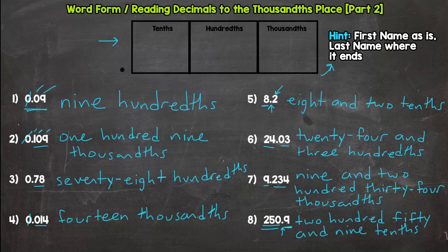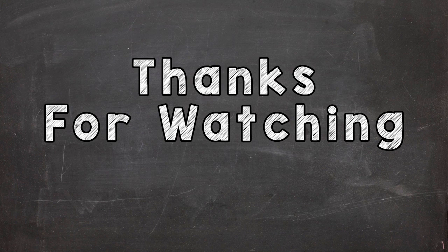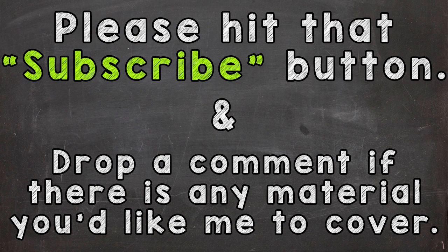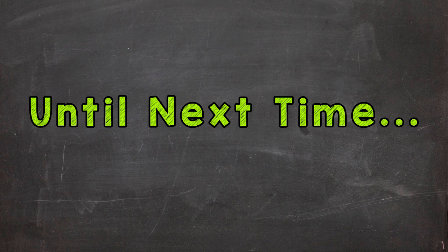Okay. So that was part two of word form slash reading decimals to the thousandths. Hopefully you're ready for our mastery check now, which I will put in the description. It'll be ten decimals where you write out word form and say them back to yourself. And I'll give you a goal score and you'll see if you hit it. Okay. So see you over on the mastery check video. Okay. Bye. I'll see you next time.